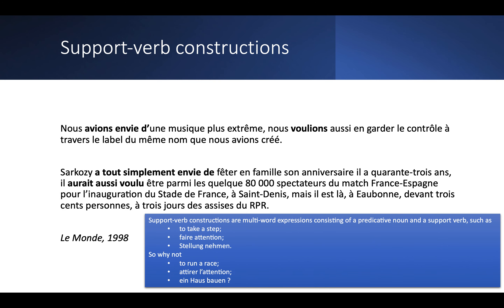On the slide you have two nice examples of the support verb construction avoir envie. The difference between the two examples is that in the first one there's nothing intervening between avoir and envie. In the second one, the phrase tout simplement is intervening between the support verb a and the predicative noun envie, and that is what we are primarily interested in today.